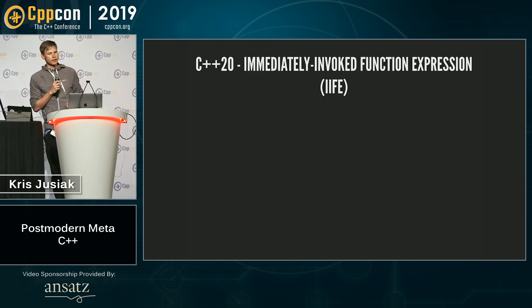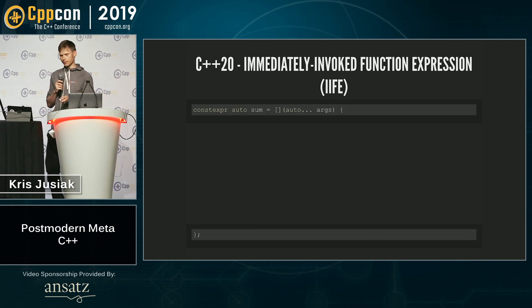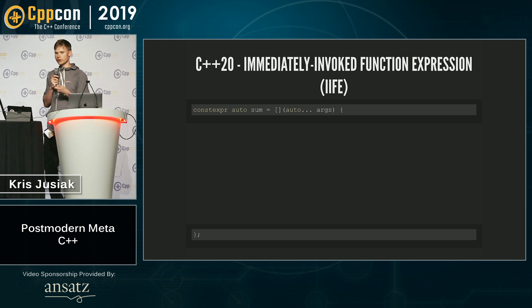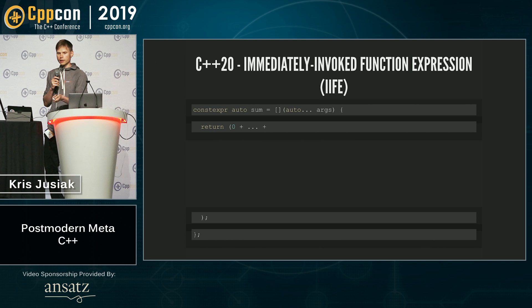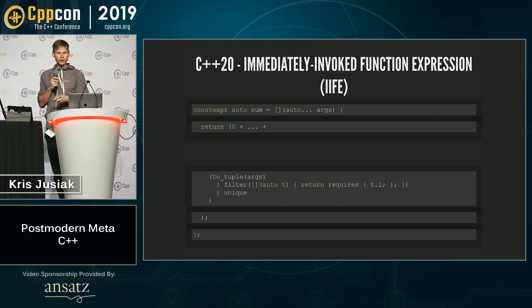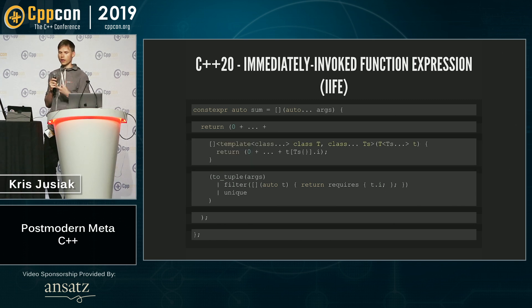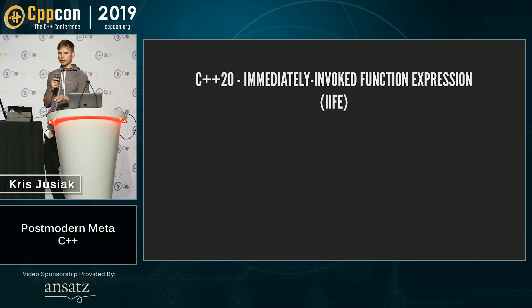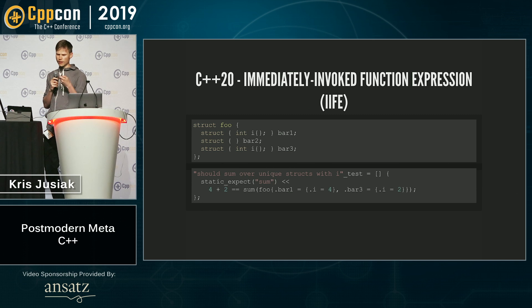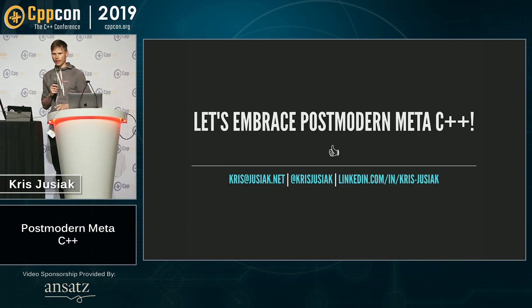Finally, with immediately invoked function expressions, we can combine all those features together to do some powerful things. Assuming we have a lambda with fold expressions, we can use to_tuple with reflection to filter using the requires expression and a range-style interface, unique them, and pass them to a lambda with familiar template syntax to sum all the tuple elements — essentially like std::apply. When we have foo and run it, we get the result as expected. So let's embrace postmodern meta C++.